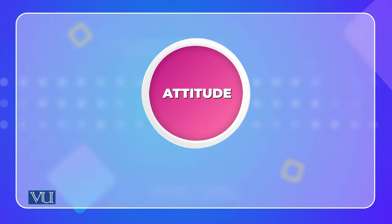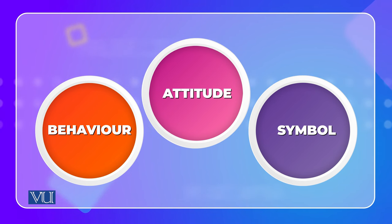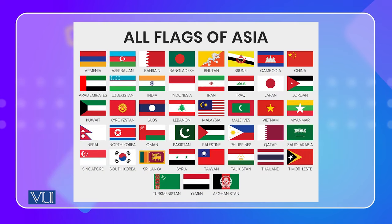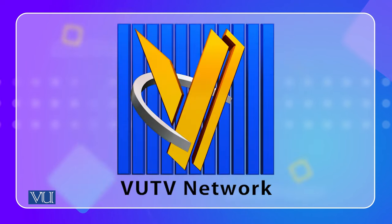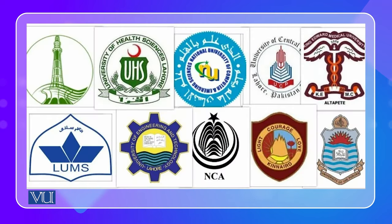Culture could be understood as a set of attitudes, behaviors, and symbols. Symbols are something a large group shares — for example, logos or university emblems in different countries. These are symbols that groups share.